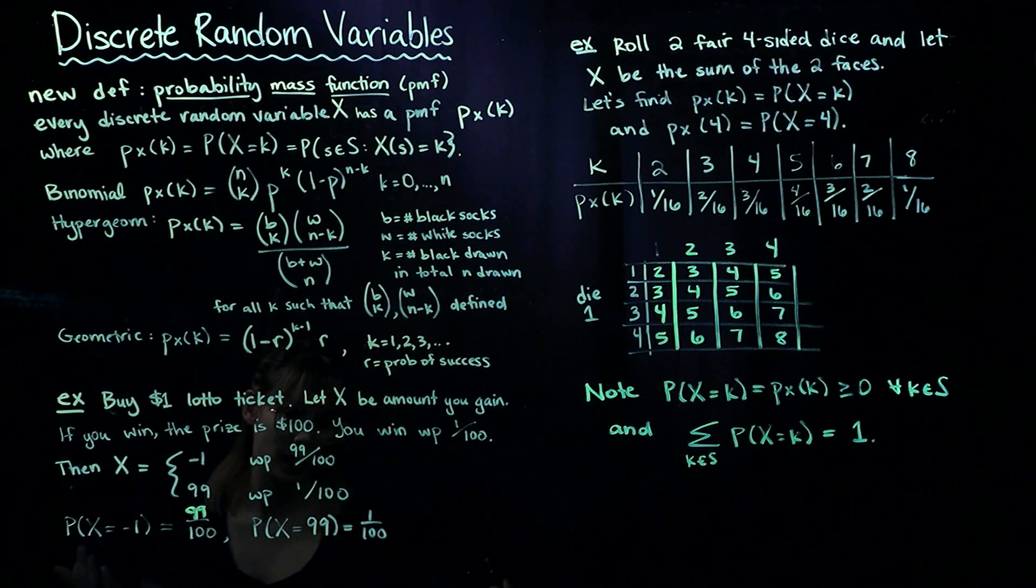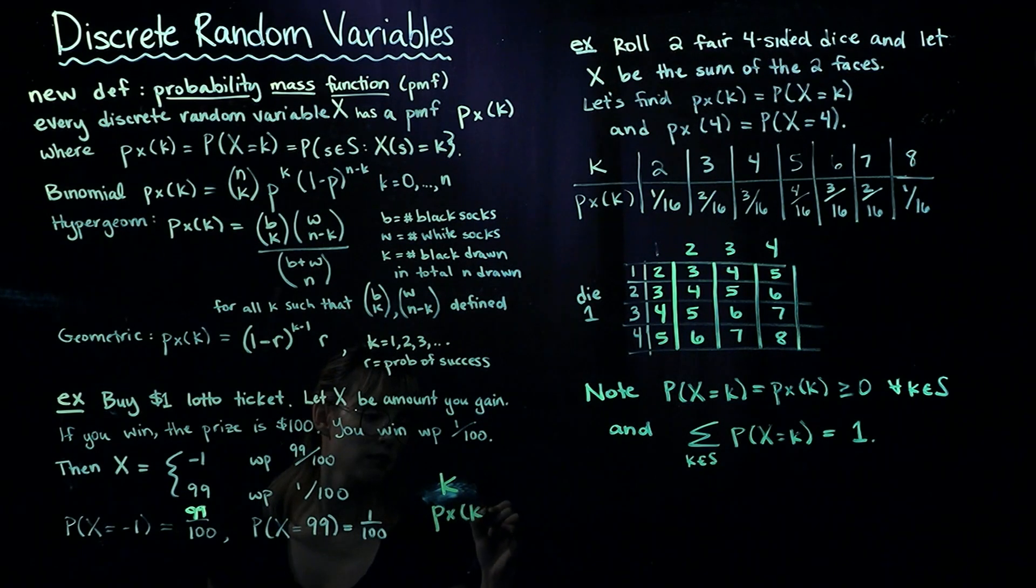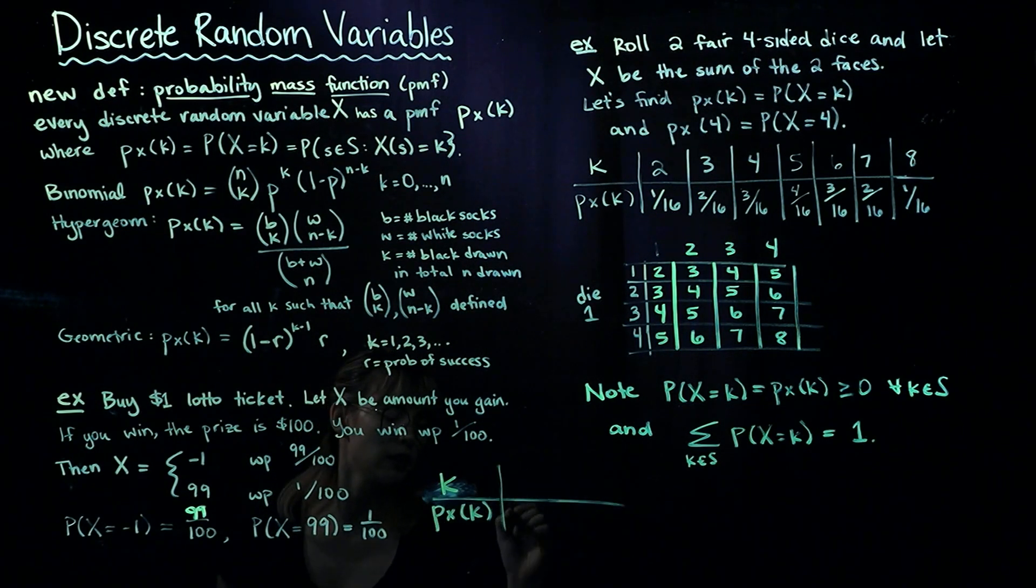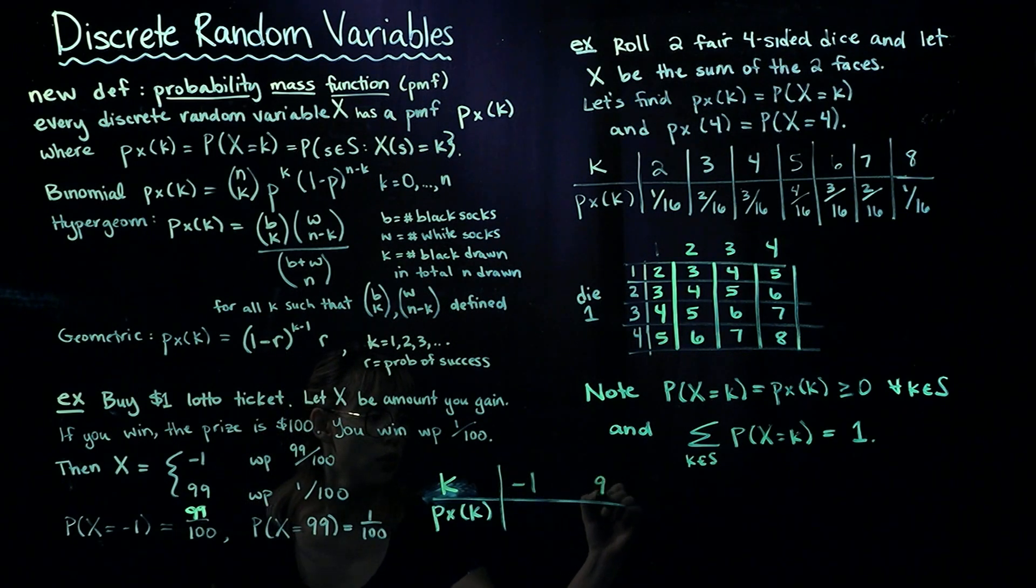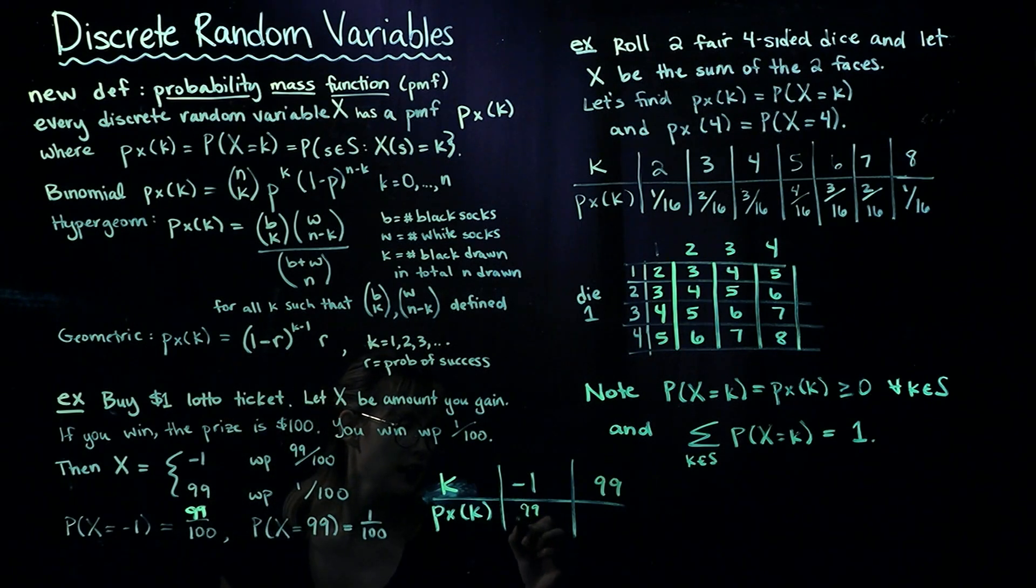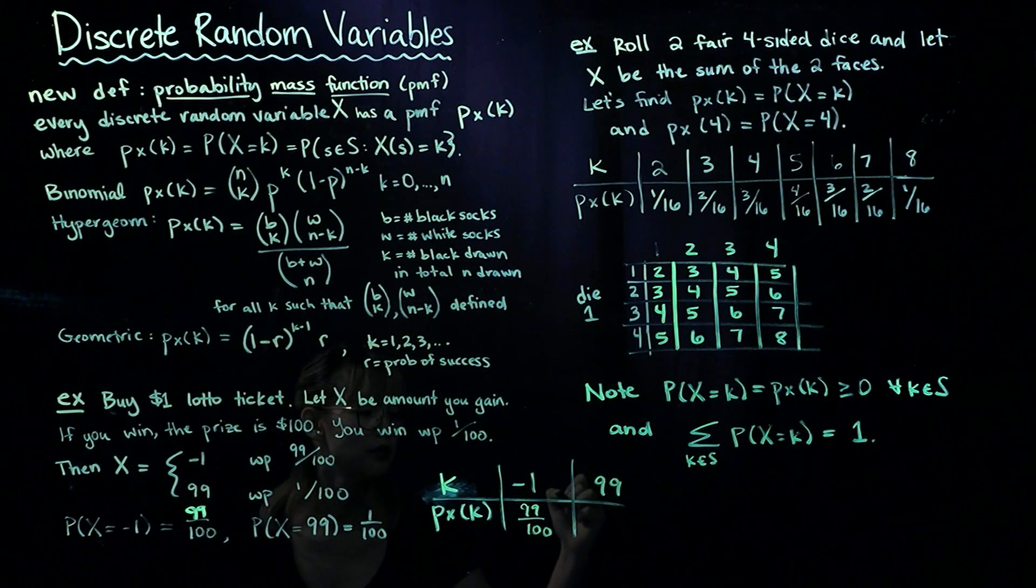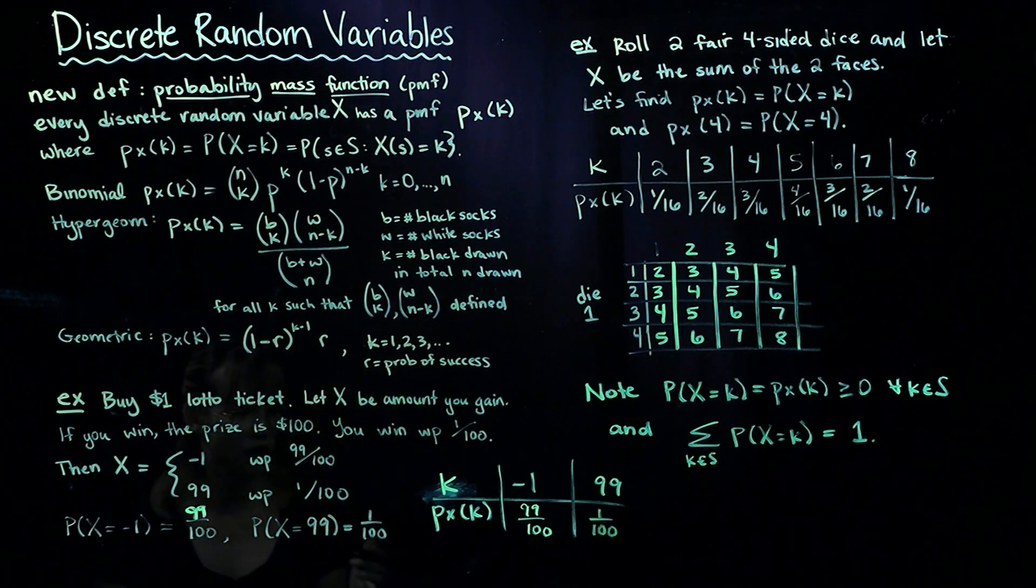We can write this in a table with K and P sub X of K. K takes on values negative one or 99, with probabilities 99 out of 100 and 1 out of 100 respectively. This is one way to represent our PMF.